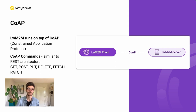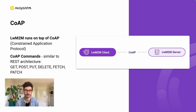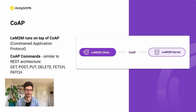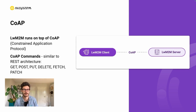The Lightweight M2M standard uses CoAP, the Constrained Application Protocol, to get messages from the client to and from the server. Think of CoAP as the HTTP protocol, but optimized for resource-constrained IoT devices. It's very similar to the REST architecture, which you may know from common web development. The client or server sends a request and awaits a response — examples of such requests are GET, POST, PUT, DELETE, etc.